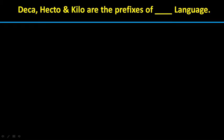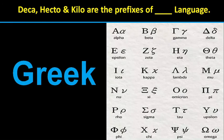Deca, hecto, and kilo are the prefixes of Greek language. These are the prefixes of Greek language.